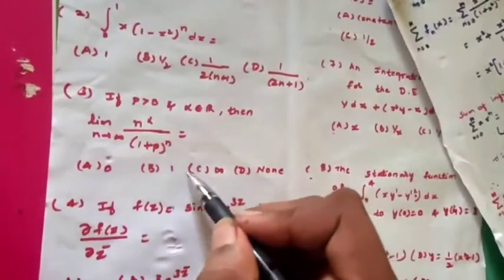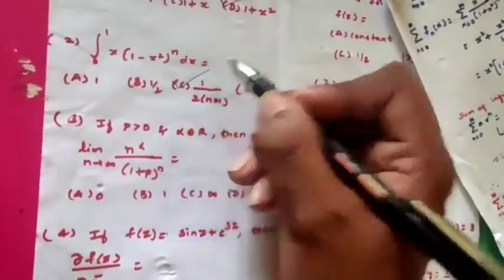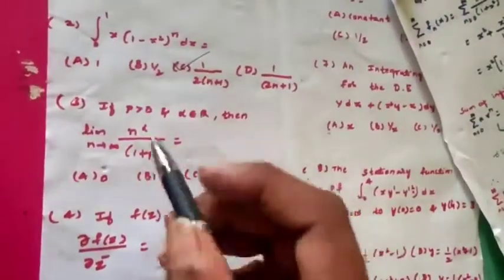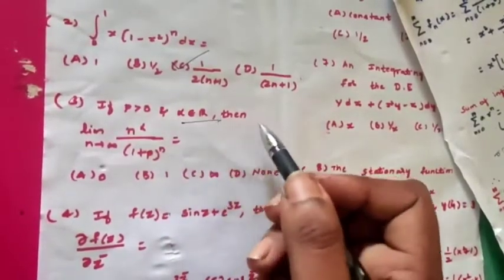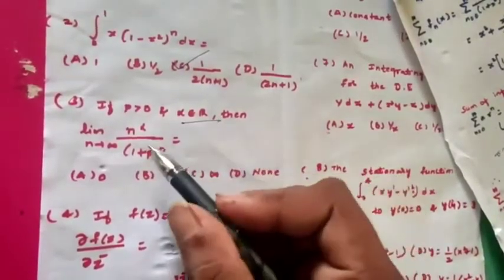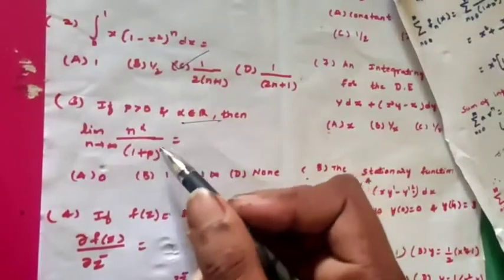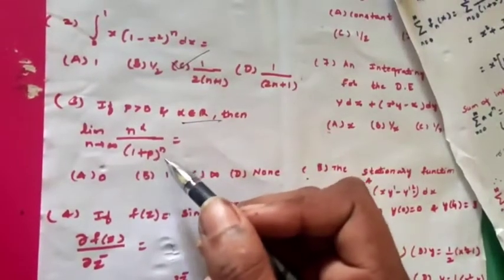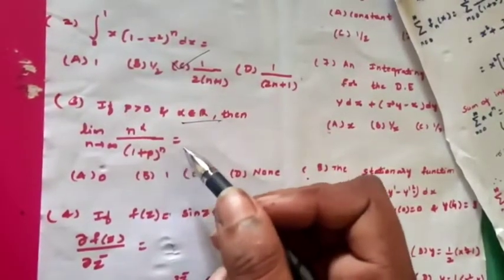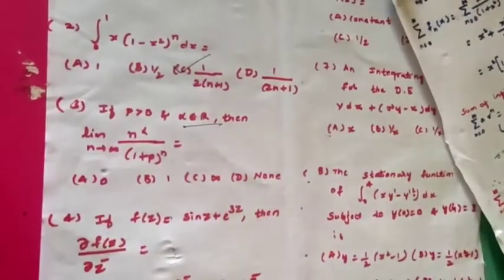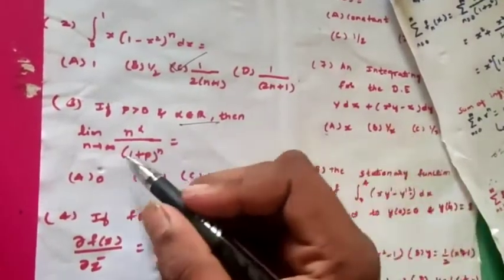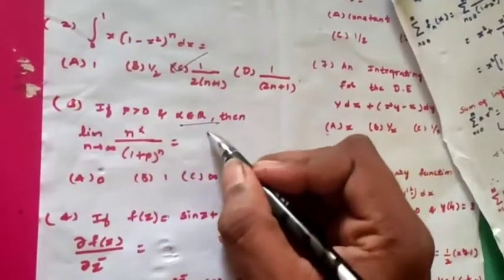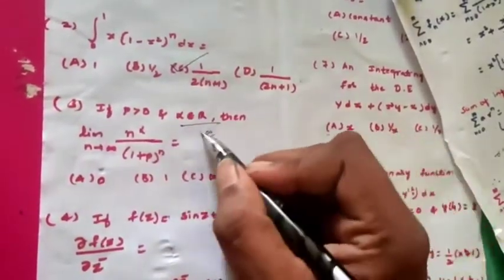The correct option is confirmed. The third question: if p > 0 and α belongs to real numbers, then find the limit as n tends to infinity of n^α / (1+p)^n. This is a very simple problem. Applying the limit we get an infinity/infinity form.